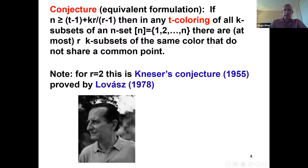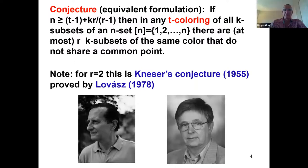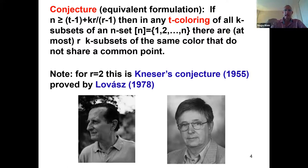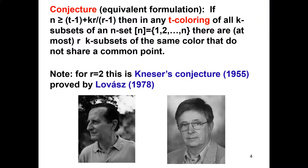Already for R equals 2, the formula gives 2K plus T minus 1. This is the Kneser conjecture, stated by Martin Kneser in the fifties: if we want to partition all K-subsets of an N-element set into pairwise intersecting families, the minimum number of families needed is N minus 2K plus 2. This was proved by László Lovász in the seventies, and it was one of the first and arguably best-known applications of topological methods in combinatorics.